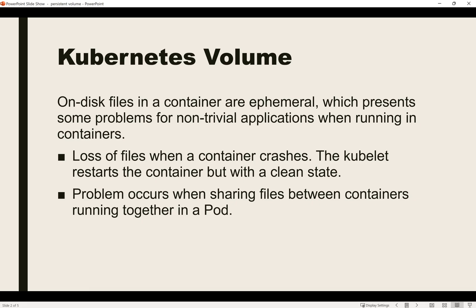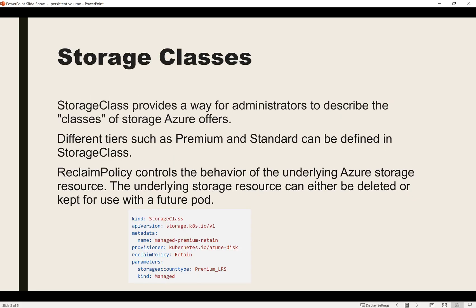To overcome this problem I will be using persistent volumes with Azure Disk. First we have to create a storage class, which is a way to define how the Azure Disk service connects to the Kubernetes cluster. We define which tier to use — premium or standard — and the reclaim policy: whether to retain or delete the Azure Disk when the persistent volume claim is deleted.